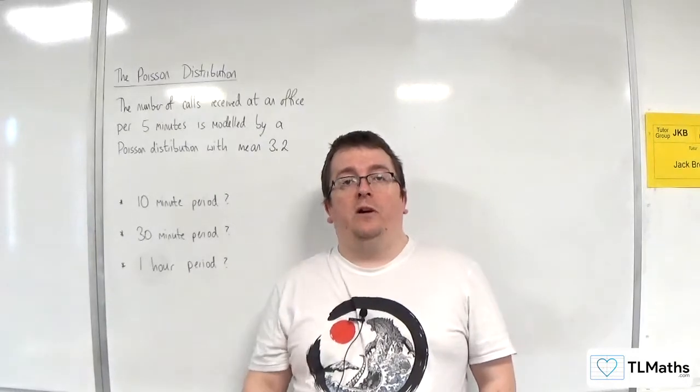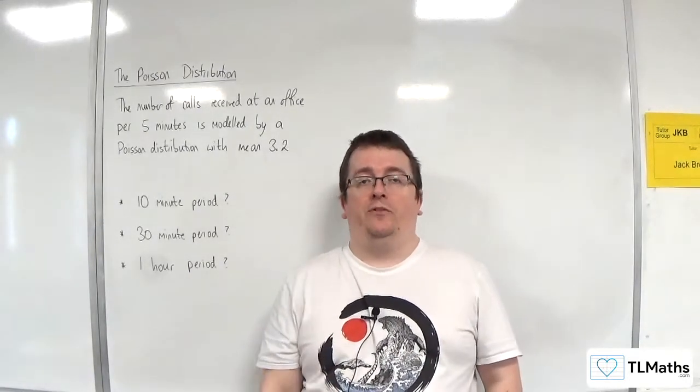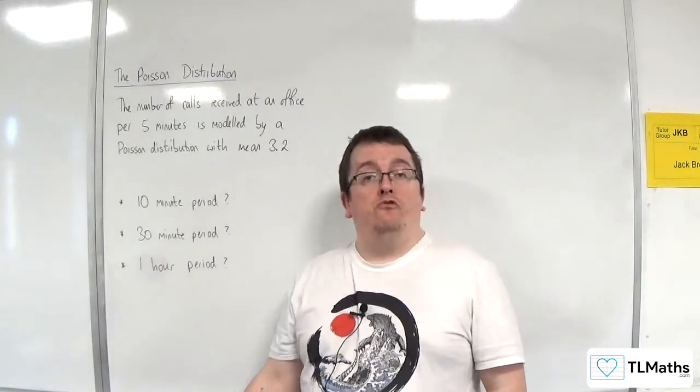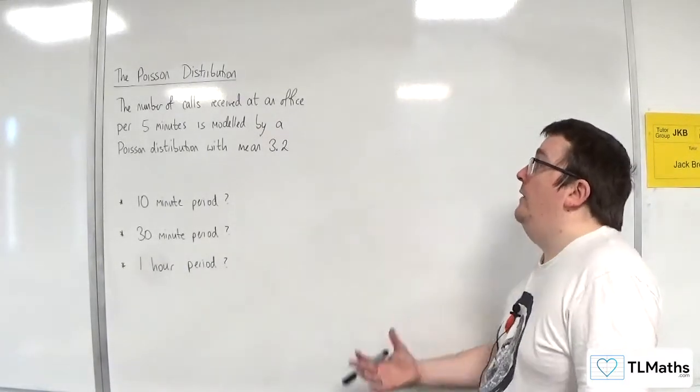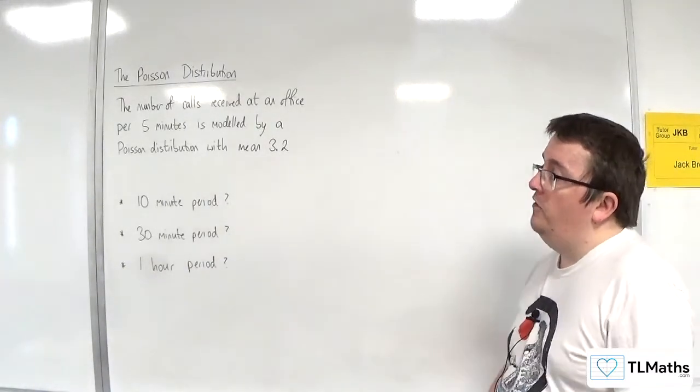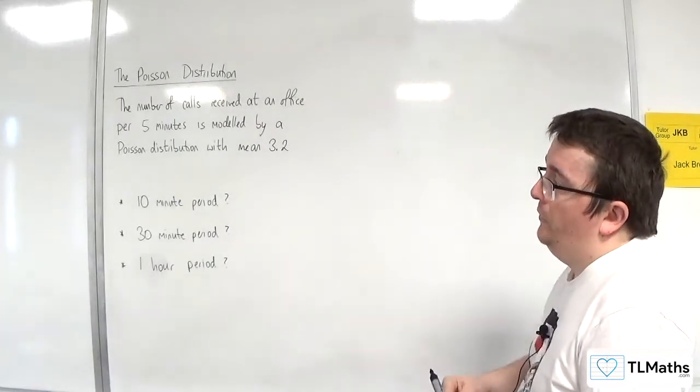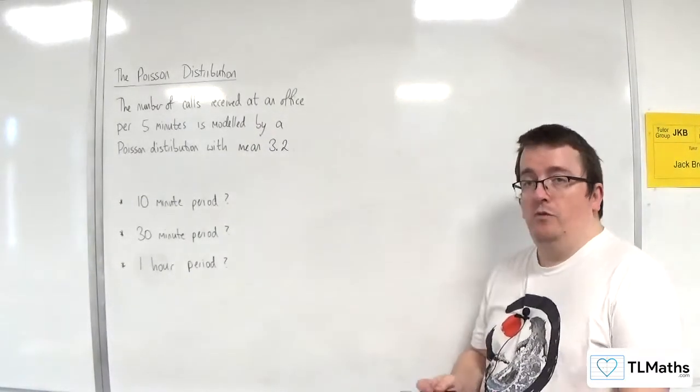In this video, I want to give you an example of how we can adapt the Poisson distribution to deal with different rates. So let's say the number of calls received at an office per five minutes is modeled by a Poisson distribution with a mean of 3.2.